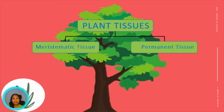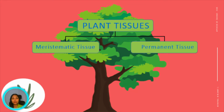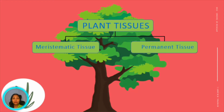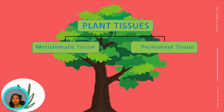Hello learners. You already know that a tissue is a combination of similar cells that work together to perform a particular function. Therefore, plant cells build tissues. Plant tissue can be divided into two main groups: the meristematic tissue and the permanent tissue.